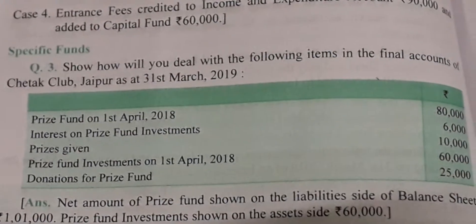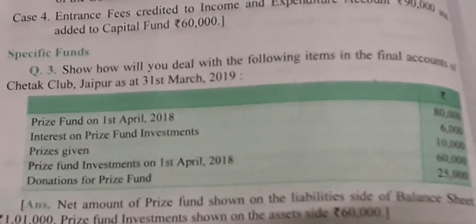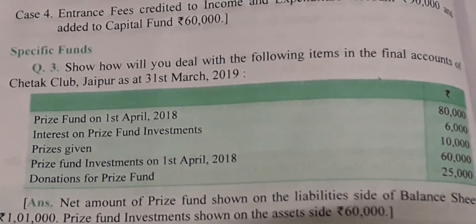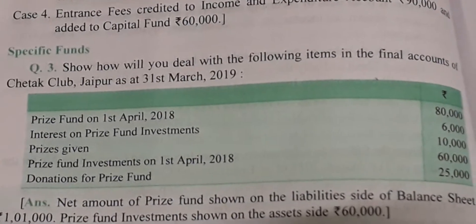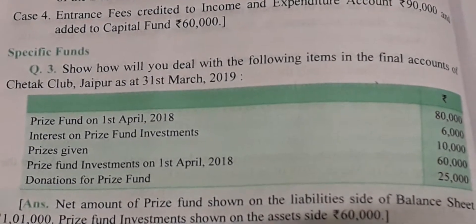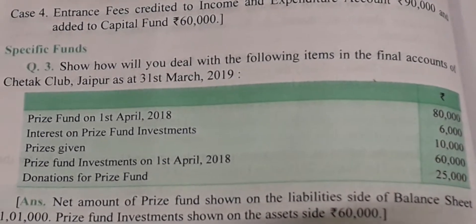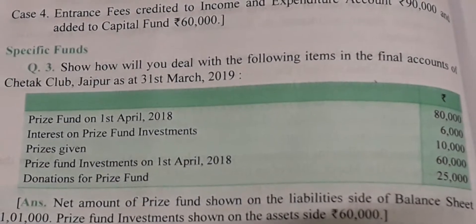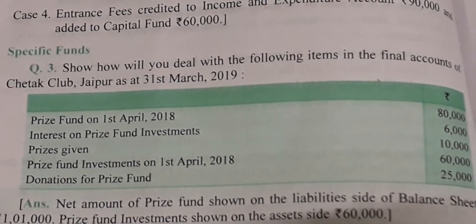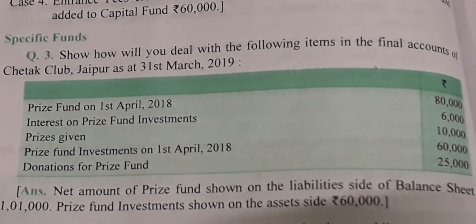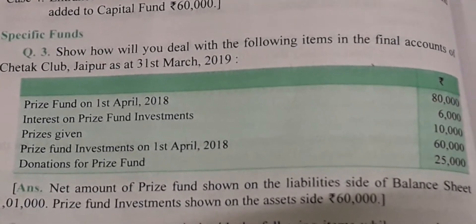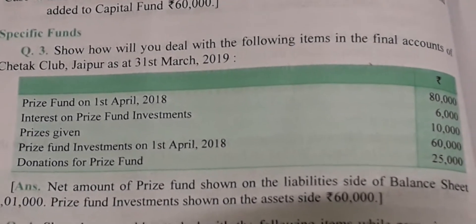Om Namah Shivaya. Children, in today's class I will tell you some calculations of specific fund. Now you can see here question number 3: How will you deal with the following items in the final accounts of Chetak Club Jaipur as at 31st March 2019?